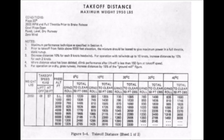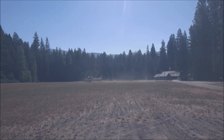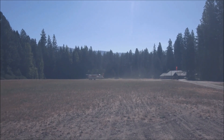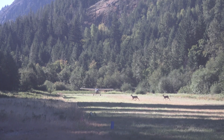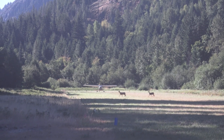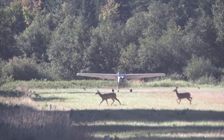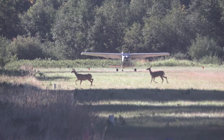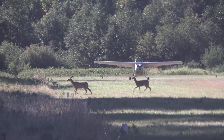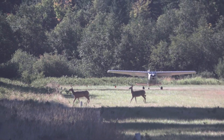Here is the POH of the Cessna 182P and it shows you the distance you need to clear the obstacle at different temperatures. High density altitude is also mentioned, and you need to lean above 5,000 feet.